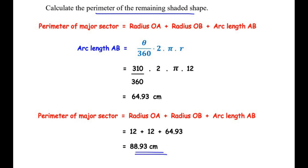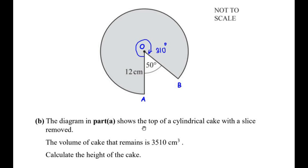Now let us move on to the second question. The diagram in part a shows the top of a cylindrical cake with a slice removed. The volume of the cake that remains is 3510 cubic centimeters. We need to calculate the height of the cake.